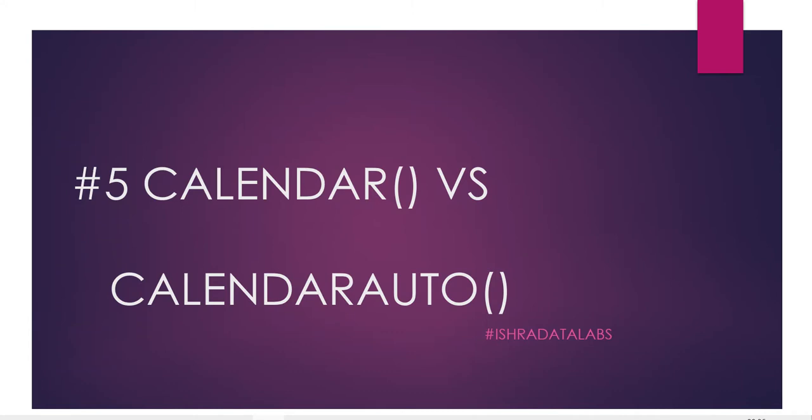Hi, hello guys and welcome back to the channel DAX series playlist. This is the fifth video — Calendar versus Calendar Auto. The real-time calendar function is used in the real-time calendar function. Calendar Auto is going to be different. Why? Because in the interview, the calendar function is automatically different. So basically, we are understanding the difference.